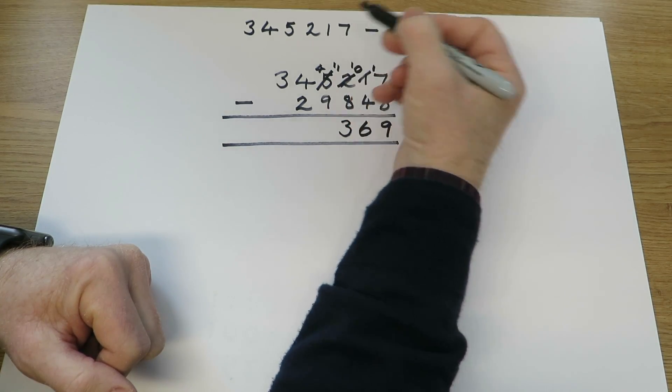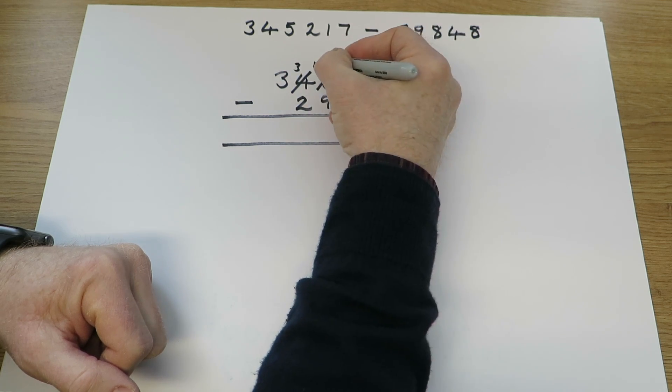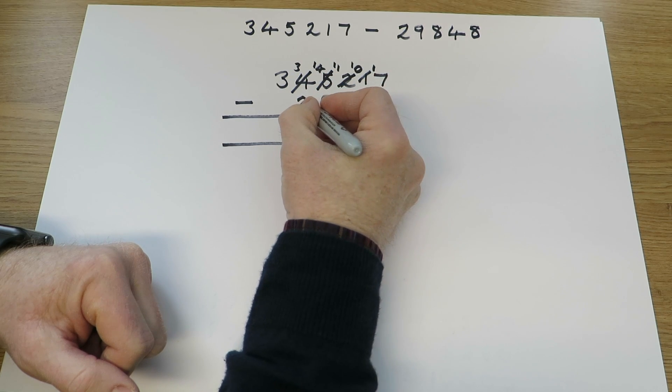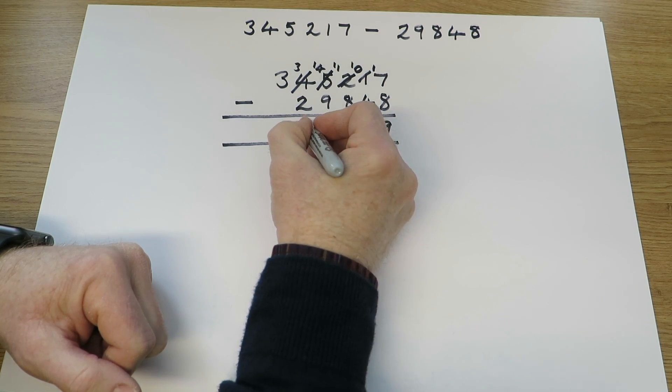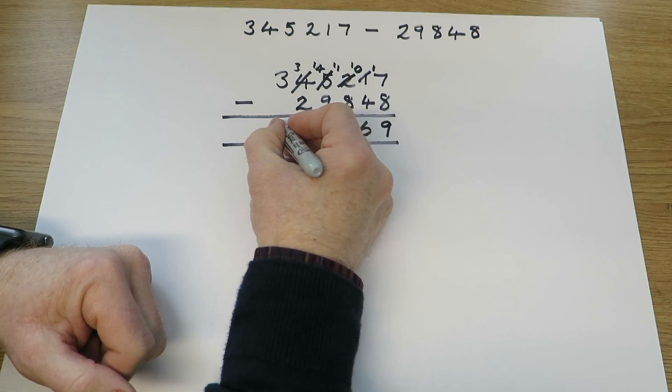4 take away 9. We haven't got enough thousands, so we'll use one of the 10 thousands. 14 take away 9 gives us 5,000. 3 10 thousands take away 2 10 thousands gives us 1 and 3 100 thousands. We're not taking anything away, so we can keep the 3.